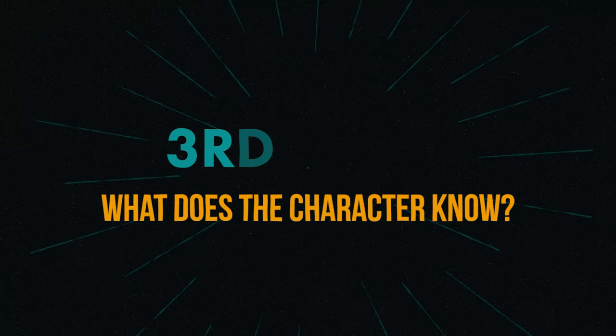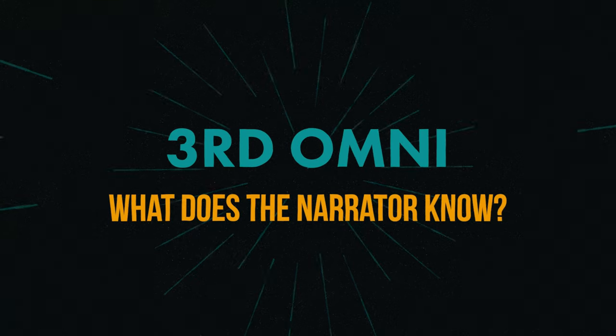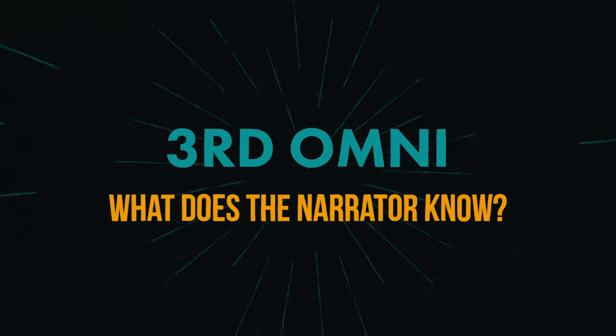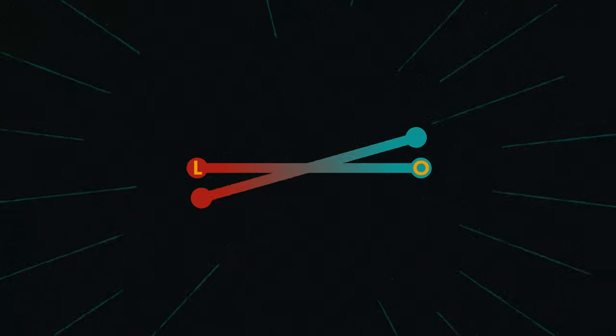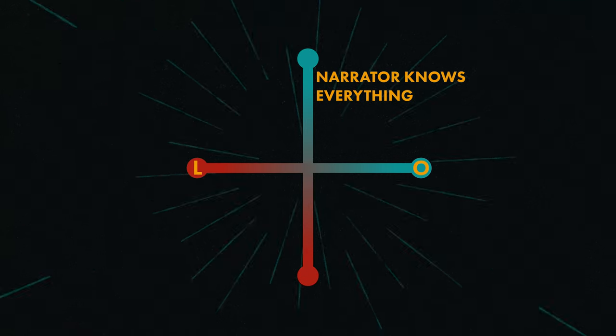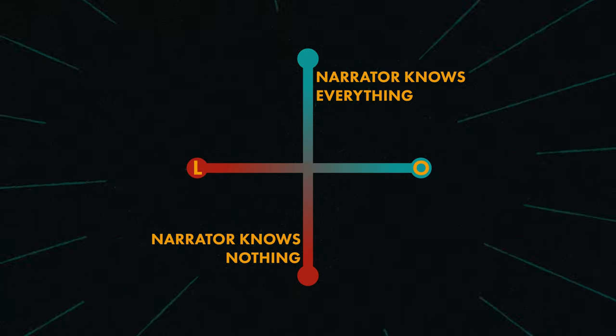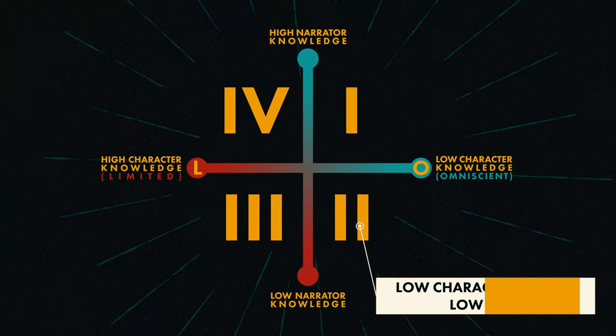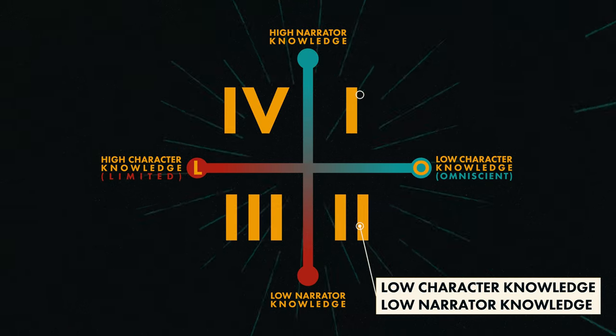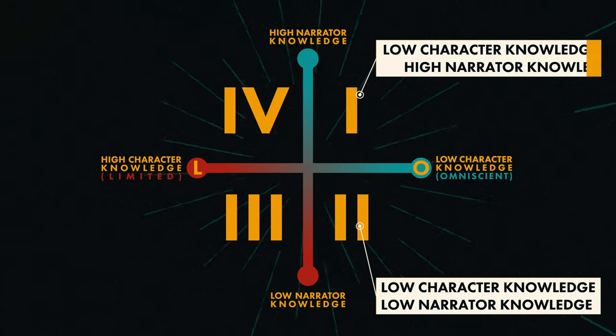In limited, our restriction is: what does the character know? But in omniscient, we can go beyond the character and ask the broader question: what does the narrator know? Answering that question will give you lines you can't cross and serve as a grounding point. We can imagine it as a second axis to the character question, with the narrator knows everything at the very top and the narrator knows nothing at the very bottom. Each quadrant of this graph behaves differently, and a story low on character and narrator knowledge is going to feel different than one with low character knowledge and high narrator knowledge.